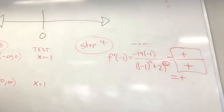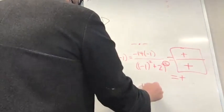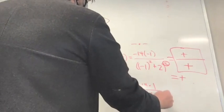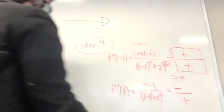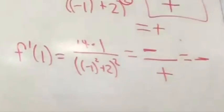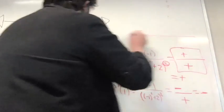And then f prime of positive one, it's the same kind of reasoning: negative 14 times one over negative one squared plus two squared is equal to a negative number because it's negative times positive over a positive number, and the ratio of those things will be negative. So you don't actually have to evaluate in this step, you just have to get to a place where you can say that f prime of negative one is positive and f prime of one is negative.